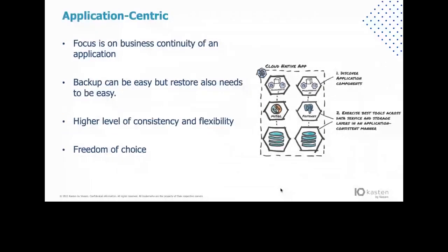That's where the next layer comes in — being application-centric. This focuses on capturing everything under the application banner: the front end, the back end, but also the data service we want to leverage and restore from. This allows us freedom of choice when it comes to recovery — using fast application-consistent snapshots when it makes sense, or having a full understanding of what the whole application looks like, especially in Kubernetes where you could have hundreds of different pods and system volumes holding important data. This gives us consistency and flexibility in picking what we actually need to recover.